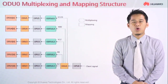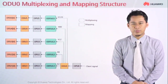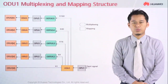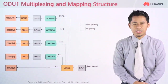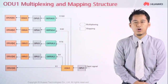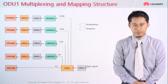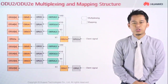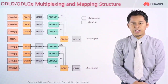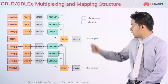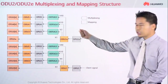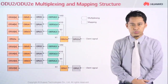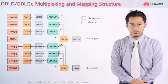Now let's go through ODU1 as well. It's the same method, which is they will multiply in order to achieve the OTU level. Same goes with OTU2 — they will multiply in order to achieve the OTU5 level.